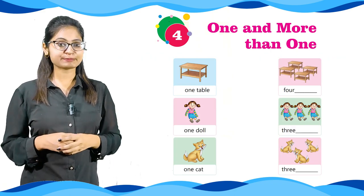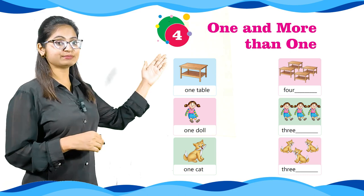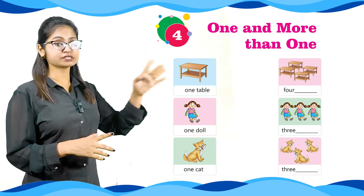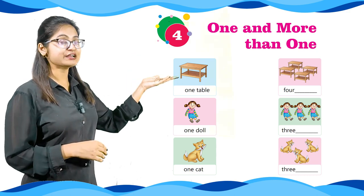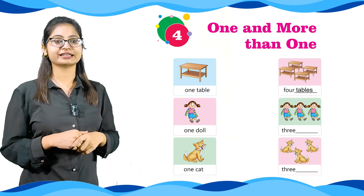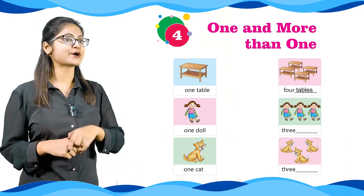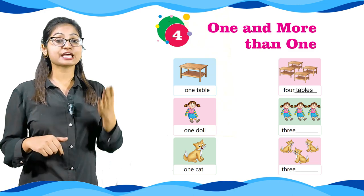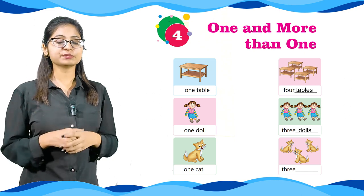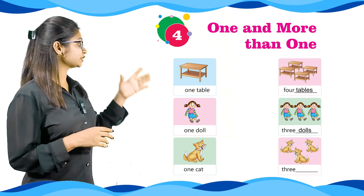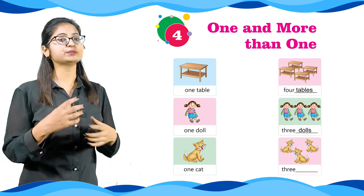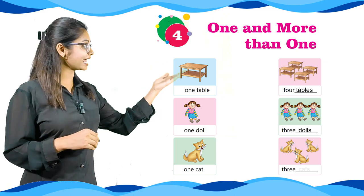Talking about the next picture, we have one table, and the next picture shows four, so what would we write in the blank? Four tables. Next we have a picture of a doll — there is one doll in the first picture and three dolls in the second. Moving towards the next picture, we can see there is one cat, and you can see there are more than one — three cats.